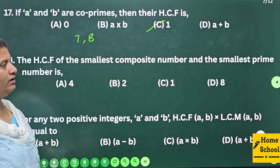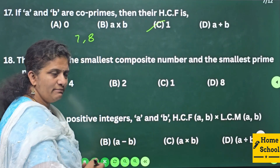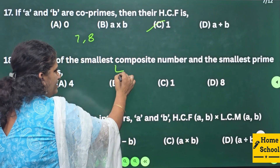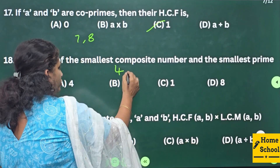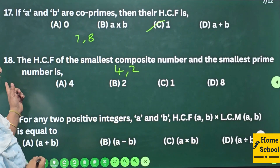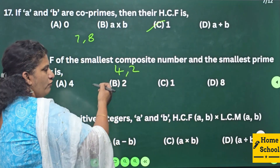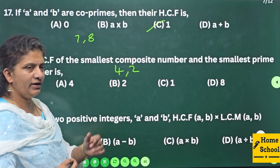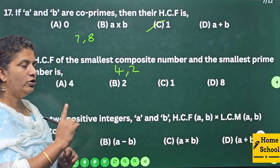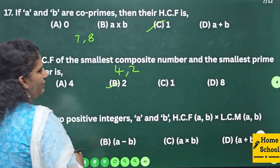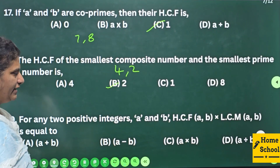4 can be written as 2×2, and 2 can be written as 2×1. The common number between them is 2, therefore your answer is option B: 2. Question 19: For any two positive integers a and b, HCF(a,b) × LCM(a,b) is equal to — we know the relation H × L = a × b, and that is your answer: option C.